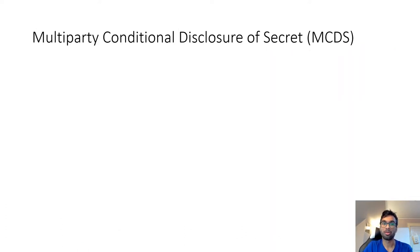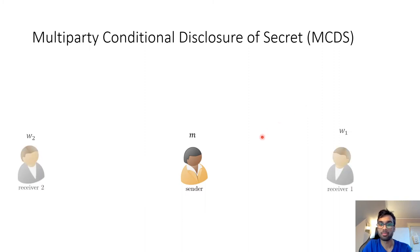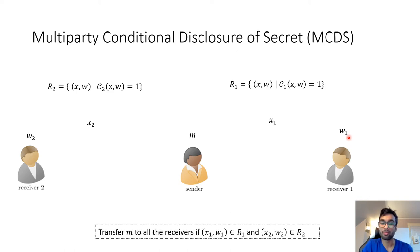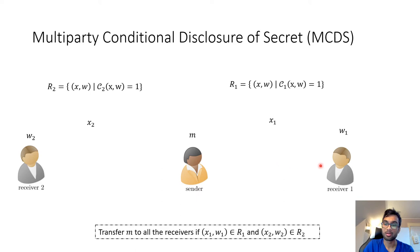We therefore formalize the notion of Multi-Party Conditional Disclosure of Secrets (MCDS). Here we have a sender with a message m and multiple receivers, each with their witnesses and instances, and an NP relation captures valid instance-witness pairs. The functionality we want: the sender's message m should be transferred to all receivers only if all the instance-witness pairs are valid.